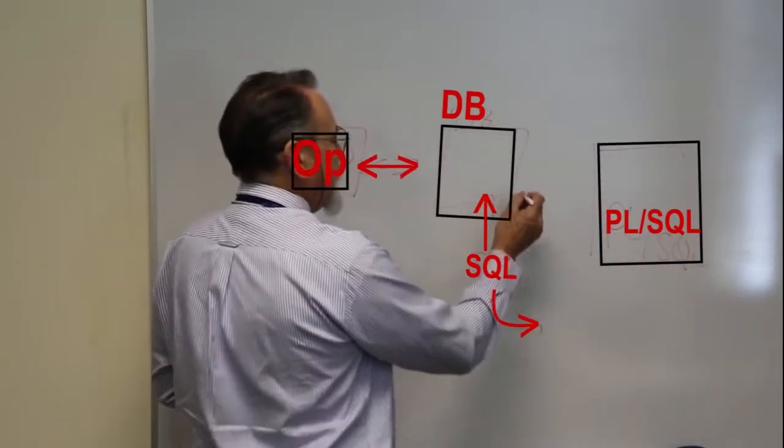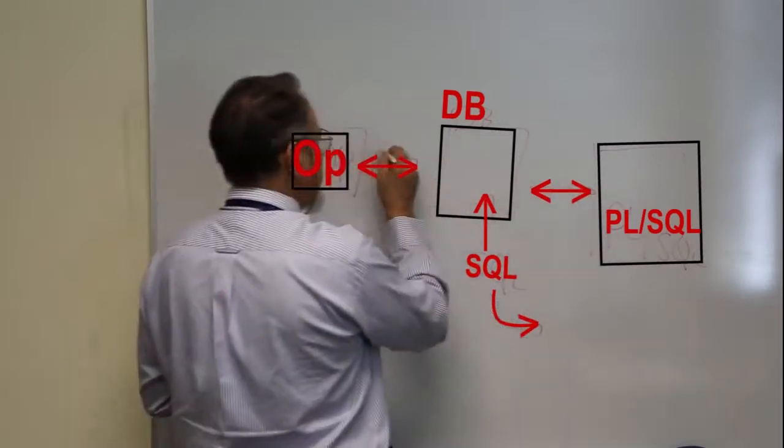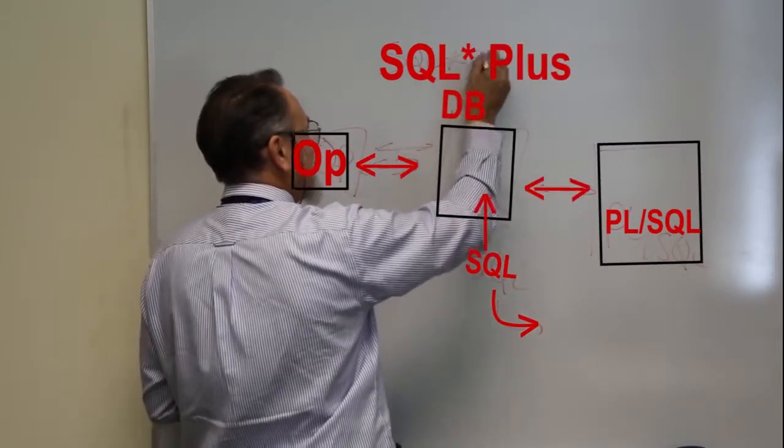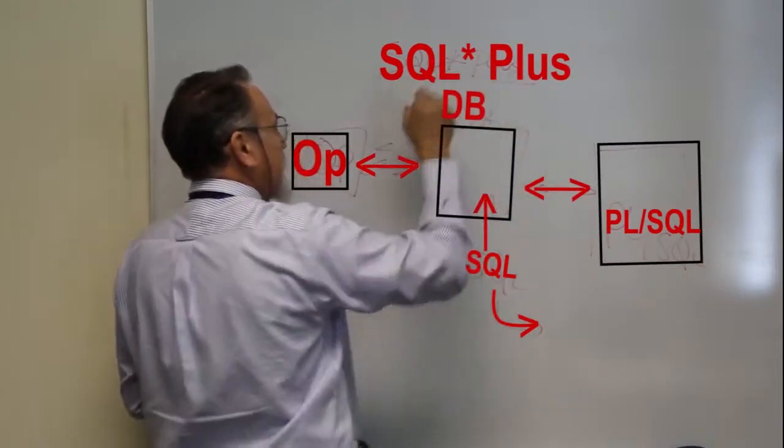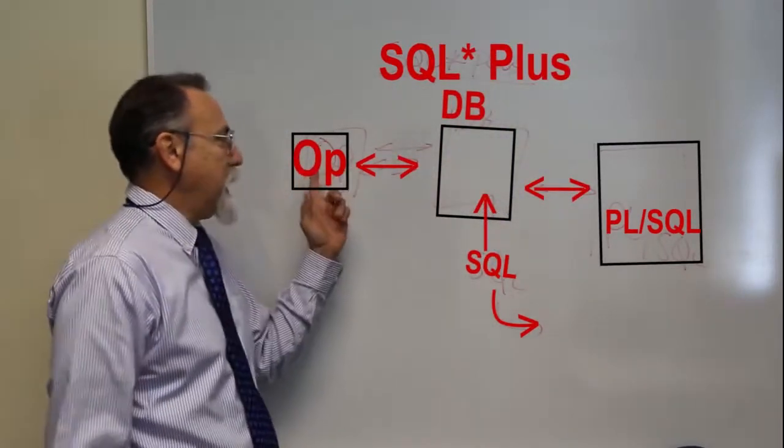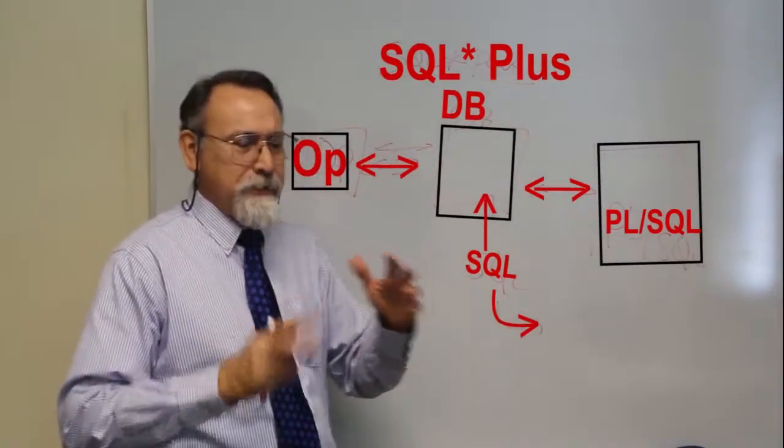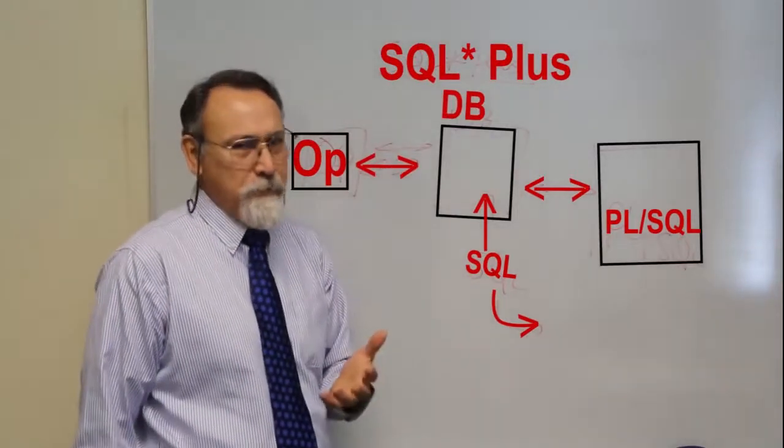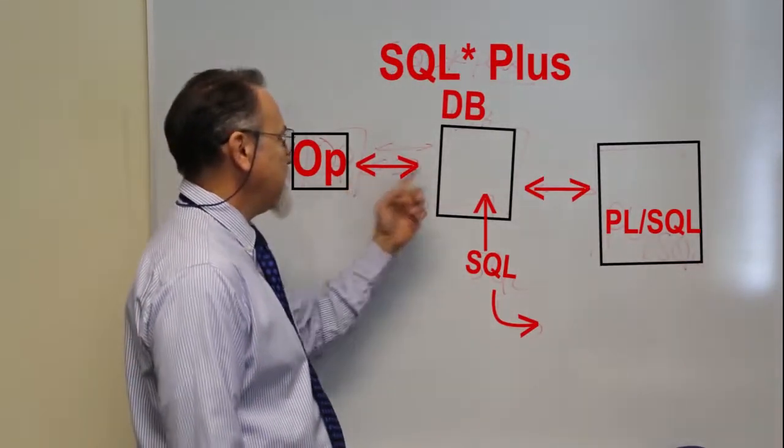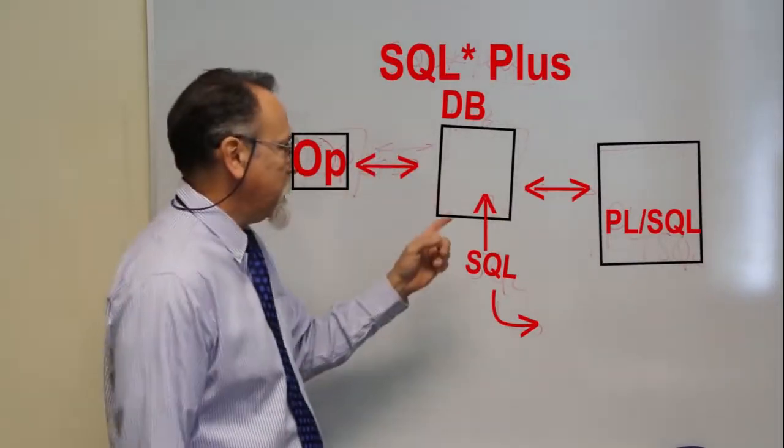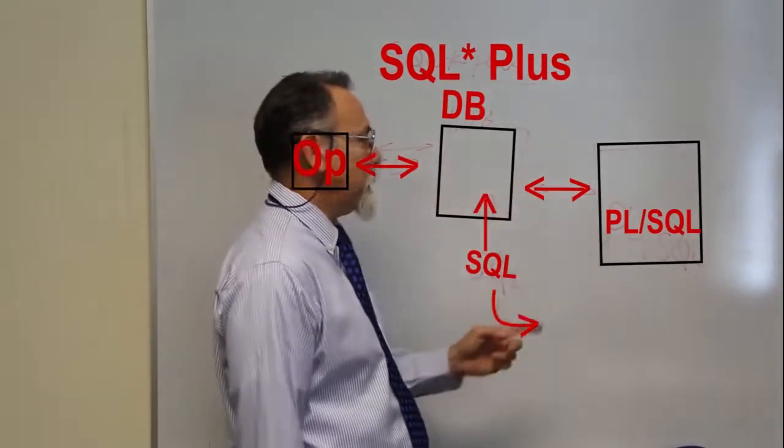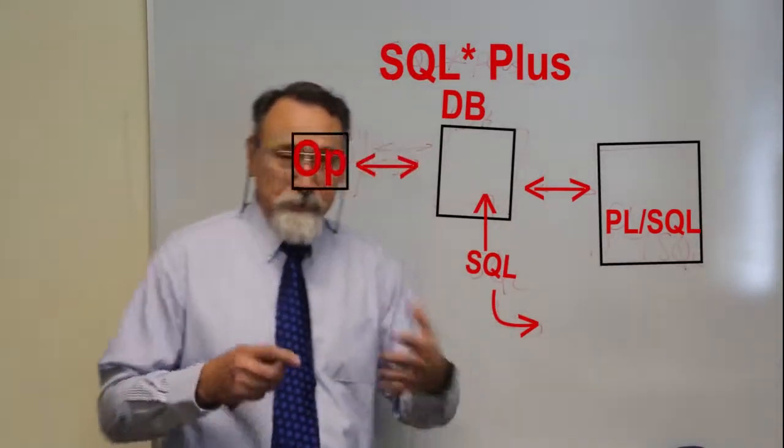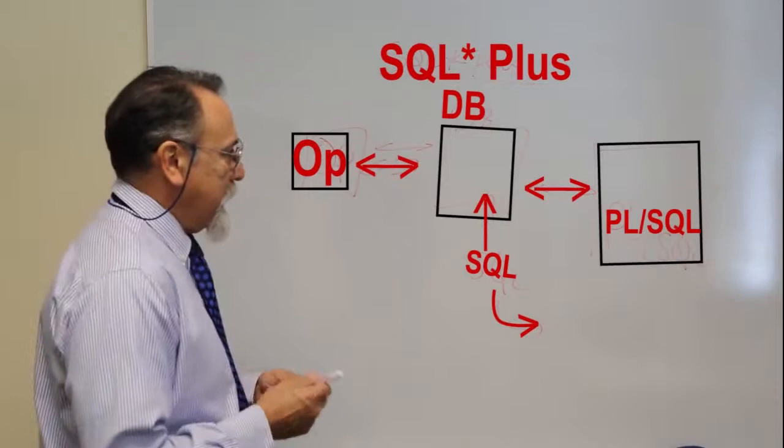The way that these two communicate is SQL Plus. SQL Plus is that language that allows the mechanisms to communicate. So SQL Plus is that interface communication mechanism that allows the operating system and database to communicate. It also allows the database and SQL to communicate with each other because they're actually separate products and you need to be able to communicate with them.